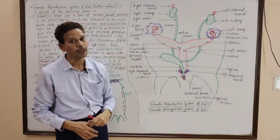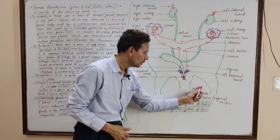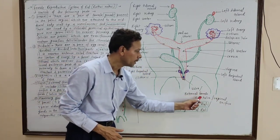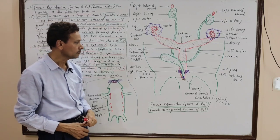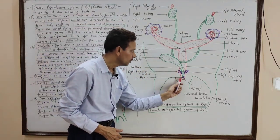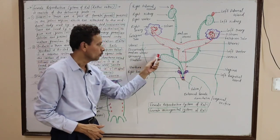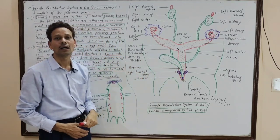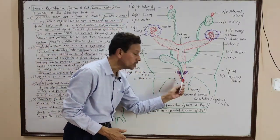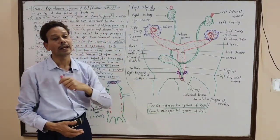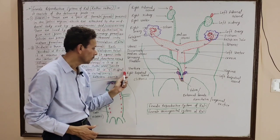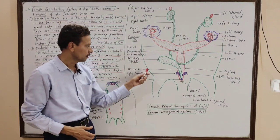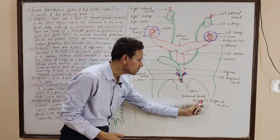These membranous folds are the labia. In this terminal part, the urinary bladder conducts urine through the urethra. Near the opening of the urethra, a pair of glands are present — these are the preputial glands. The secretion of the preputial glands lubricates the external genitalia.